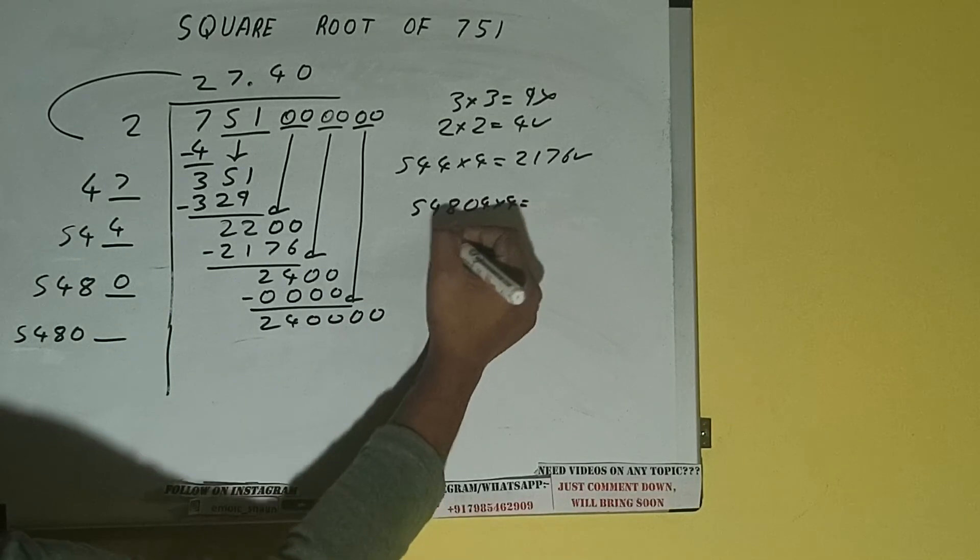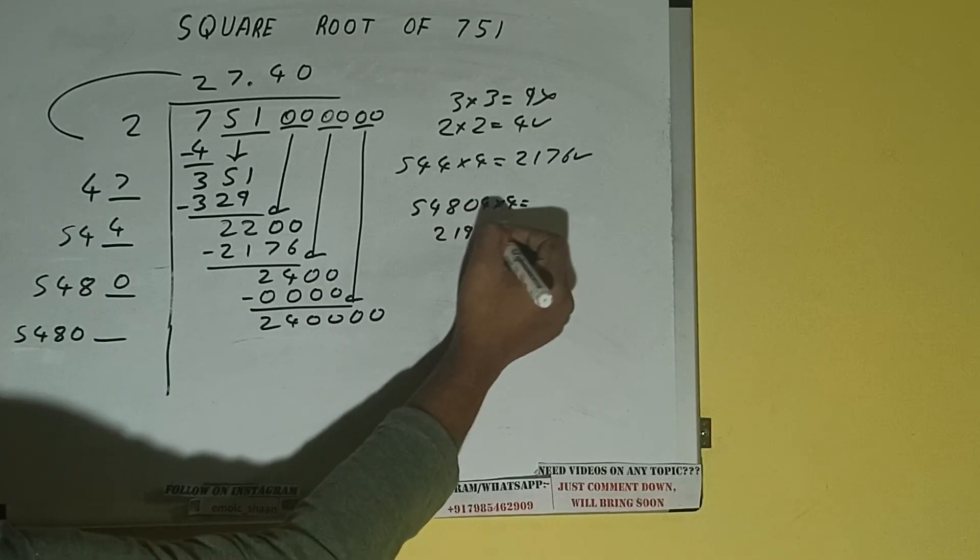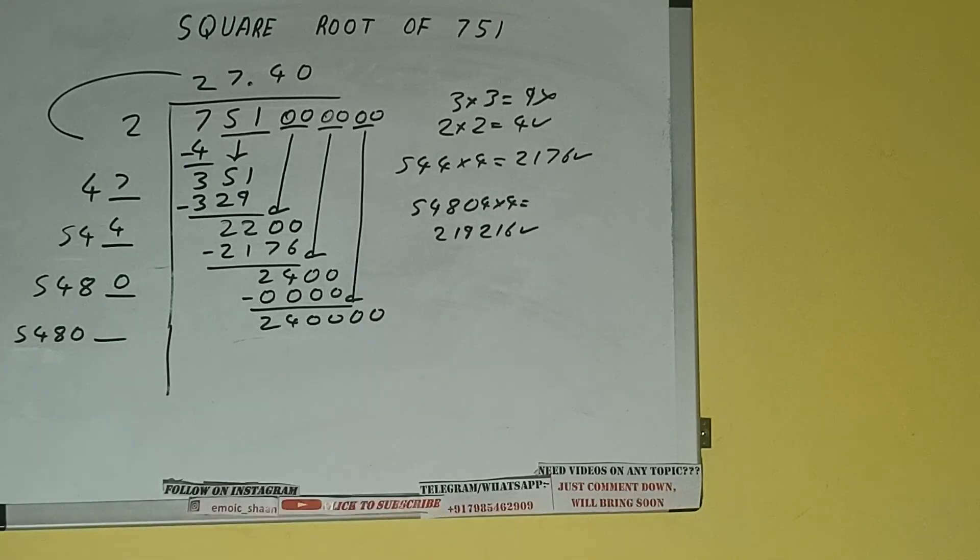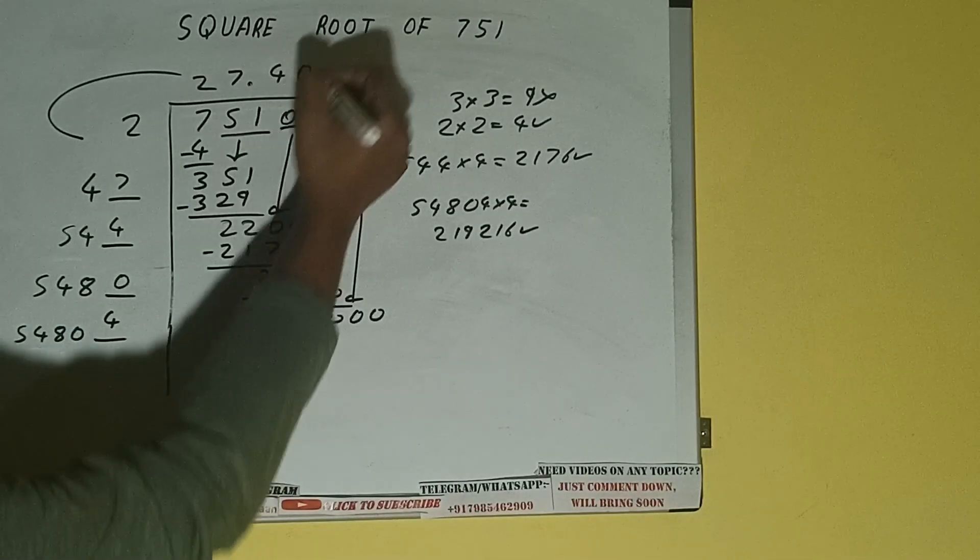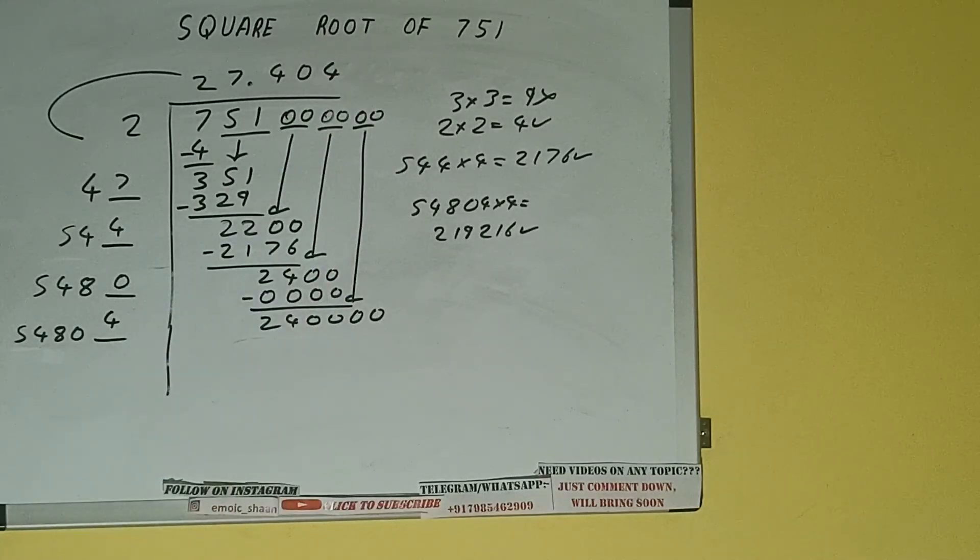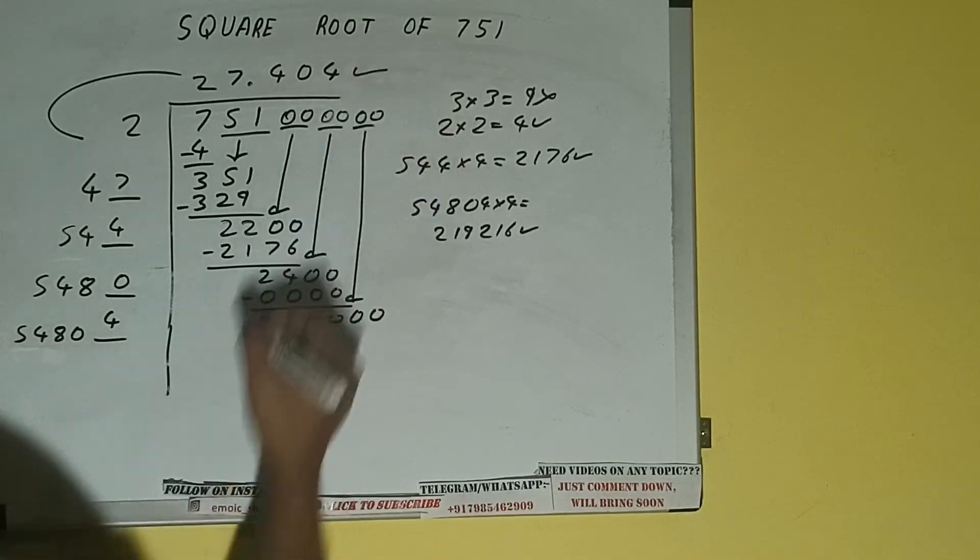And we will have 219216, which is good to take. So 4 here and 4 here. But we don't need to calculate further because we got the answer correct up to 3 decimal places.